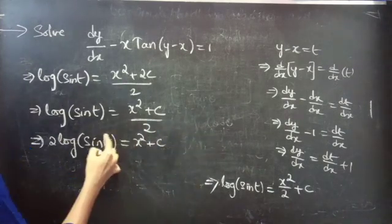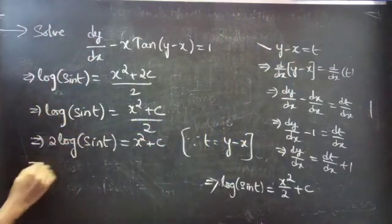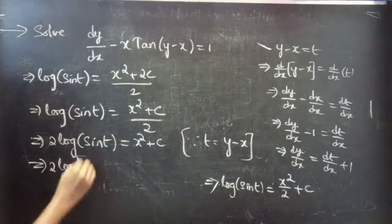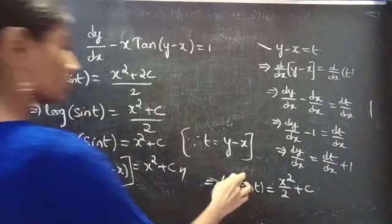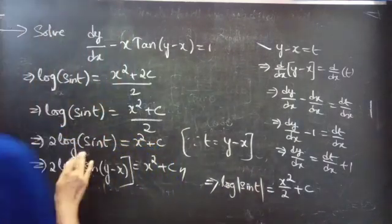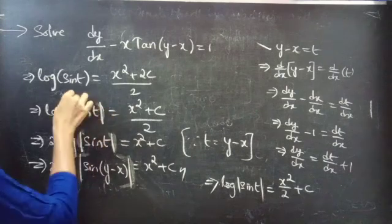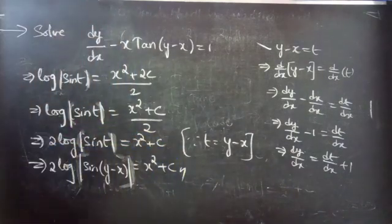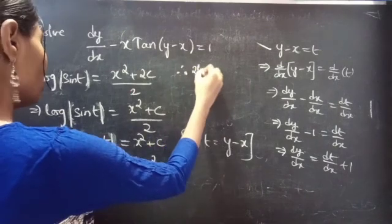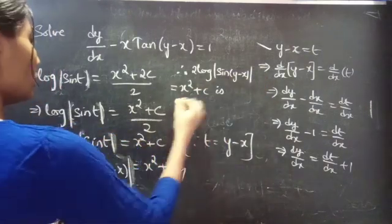Now we replace t with y minus x, since t equals y minus x. You will get 2·log|sin(y minus x)| equals x² plus c. Remember to write the modulus. Therefore, 2·log|sin(y minus x)| equals x² plus c is the general solution.